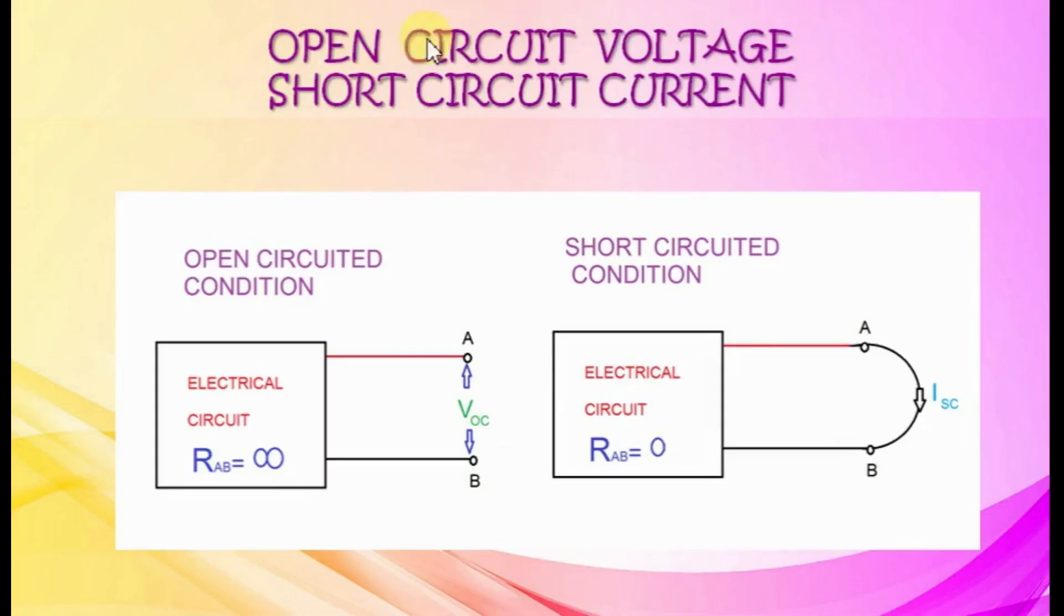Open Circuit Voltage and Short Circuit Current. In case of an open circuit condition, output terminals of an electrical circuit is open. Resistance at the terminals will be infinity. We can call voltage across open circuit terminals as VOC.